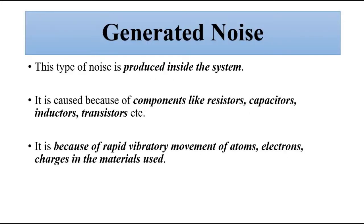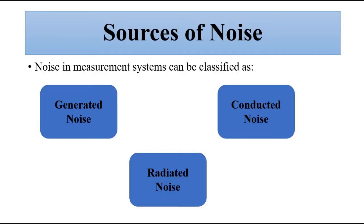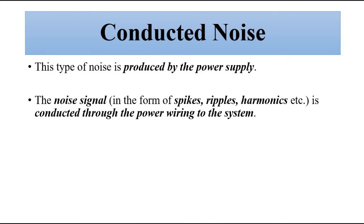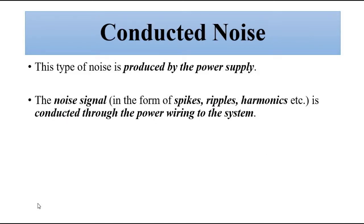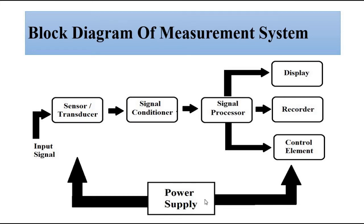Generated noise classification is complete. Then we have conducted noise. The source of conducted noise is the power supply. The noise signal appears in the form of spikes, ripples, or harmonics, which is conducted from the power supply wiring and then gets superimposed on the original desired signal from the sensor side.